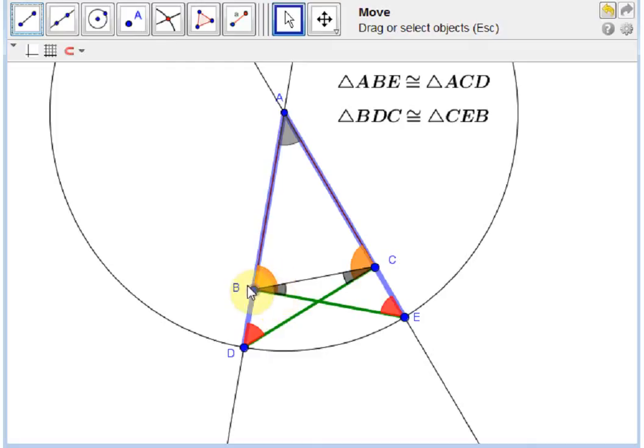you have these orange angles, subtract these gray angles, and you're left with the angles from the original isosceles triangle, angle ABC and angle ACB. Since equals subtracted from equals result in equal quantities, angle ABC is equal to angle ACB.